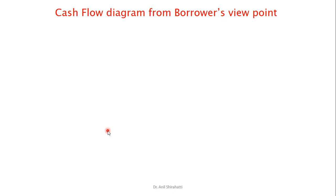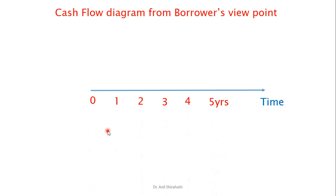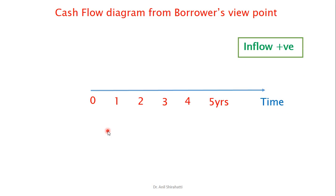Let's see a simple cash flow diagram, both from the borrower's viewpoint and from the lender's viewpoint. In general, we will draw a horizontal line, which is a time frame line, where we will be defining years or months. In this example, I am defining number of years — let's say 0 to 5 years. The top portion of the line is used when money is coming inside, that is an inflow of money. If there is an outflow of money, it is taken as negative — that is the down portion of this line.